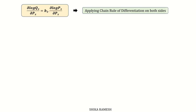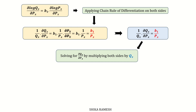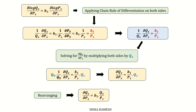Applying the chain rule of differentiation on both sides, we get (1/qx) · (∂qx/∂px) = b1 · (1/px) · (∂px/∂px) = b1 · (1/px) = b1/px. So, (1/qx) · (∂qx/∂px) = b1/px. Solving for ∂qx/∂px by multiplying both sides by qx: ∂qx/∂px = (b1/px) · qx. Rearranging: ∂qx/∂px = b1 · (qx/px), which can be written as (∂qx/∂px) · (px/qx) = b1.